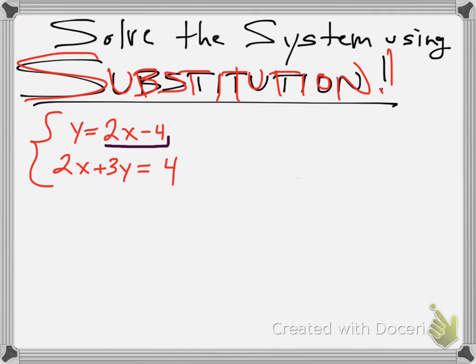So y is 2x minus 4. It says so right here. y equals that. So I come down here and I replace y where 2x plus 3 times whatever y is equals 4. But y, we know, is 2x minus 4.